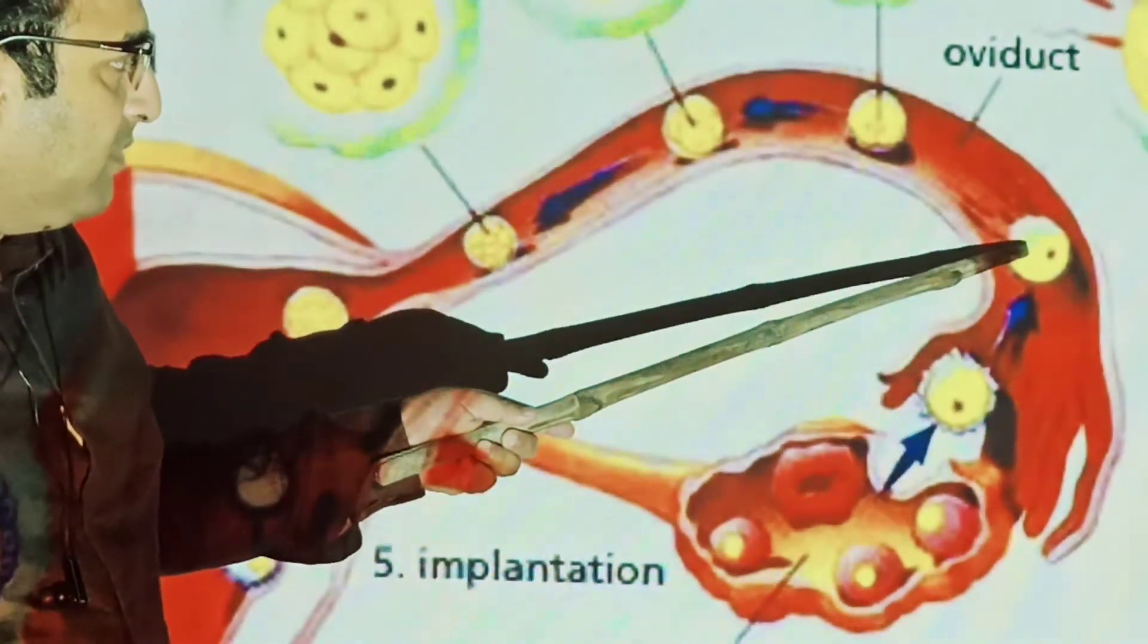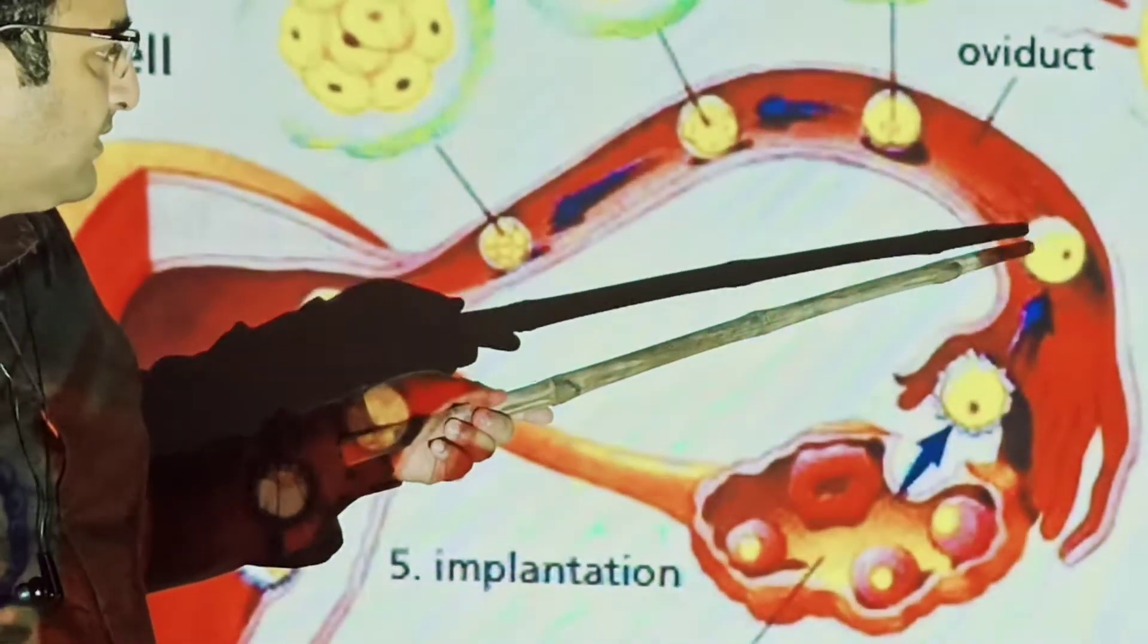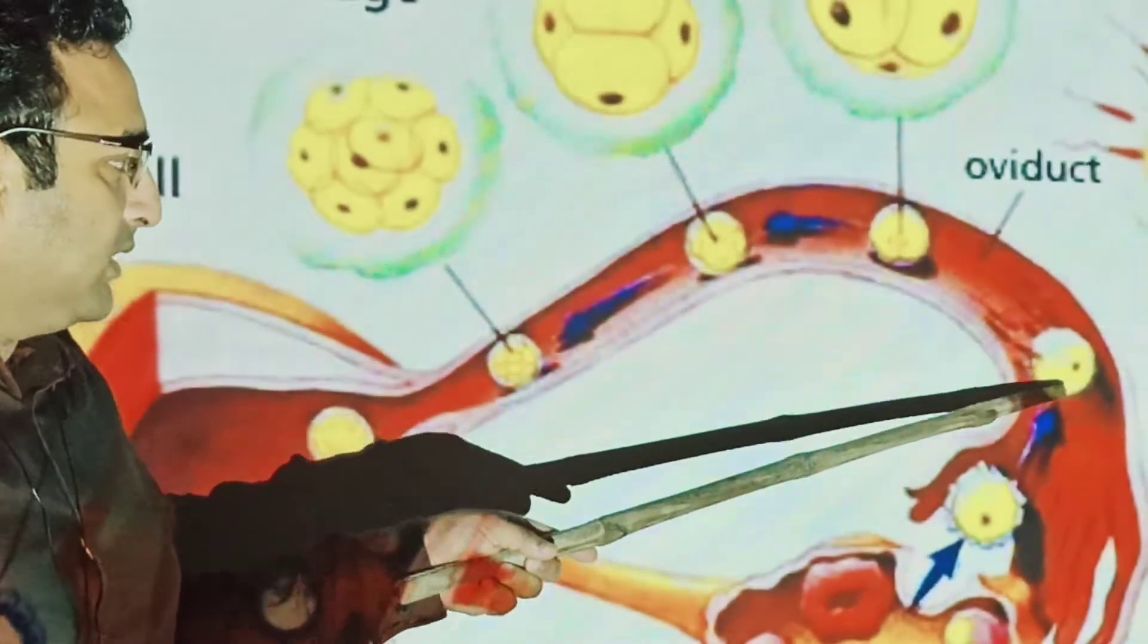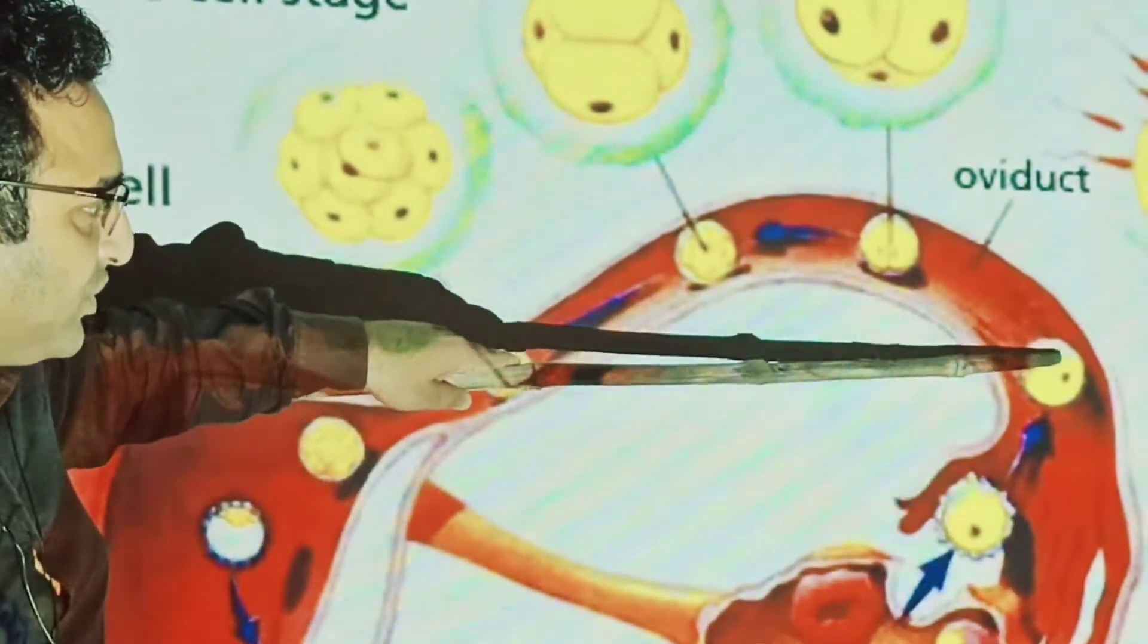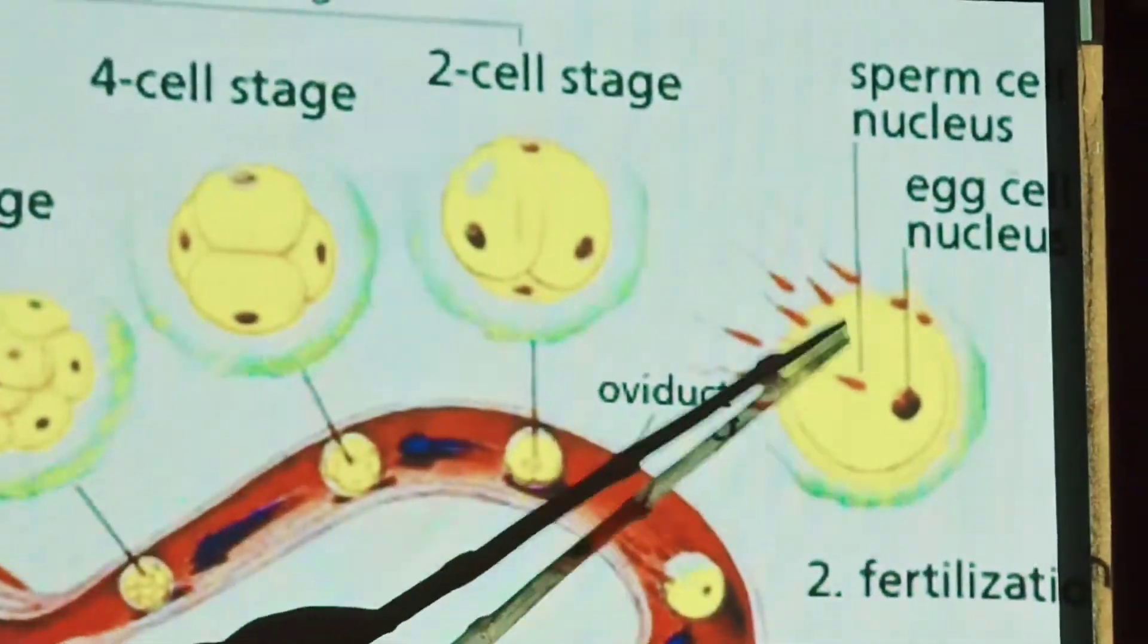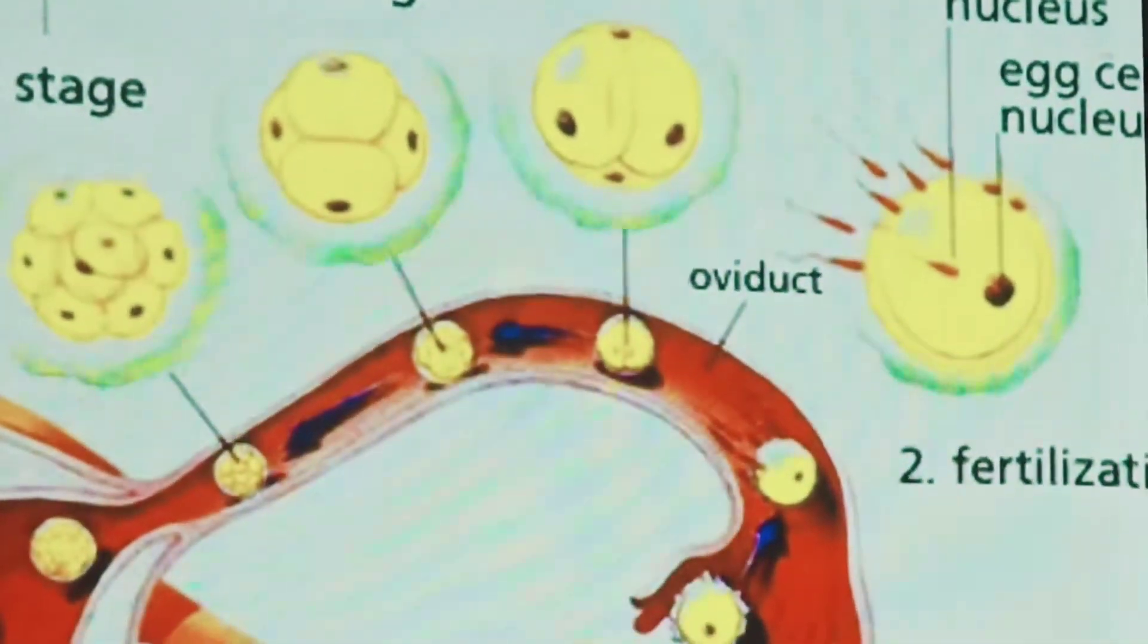The ovum is basically fused with the sperm, that male nucleus, and that leads to the formation of zygote. So here that fertilization takes place. That zygote, sperm nucleus fused with the egg nucleus, which leads to the formation of zygote. And that is named as fertilization.